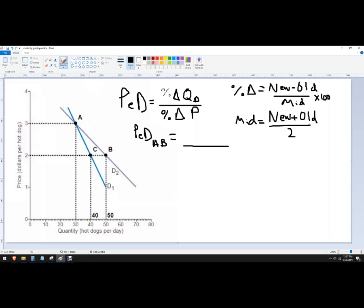So quantity, if we're going from A to B, our new quantity is 50. So it's 50 minus 30, that's the old value, divided by the midpoint, halfway between those is 40. Now this is multiplied by a hundred to get the percent. That's the change in quantity demanded.